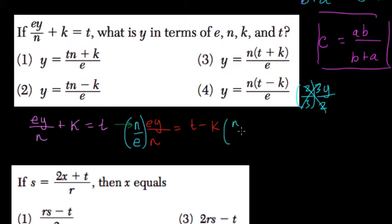So multiply both sides by N over E. This cancels out, and now we have Y, Y equals, I would distribute this, N times T is NT over E minus KN over E. So we might see it in some form like that.